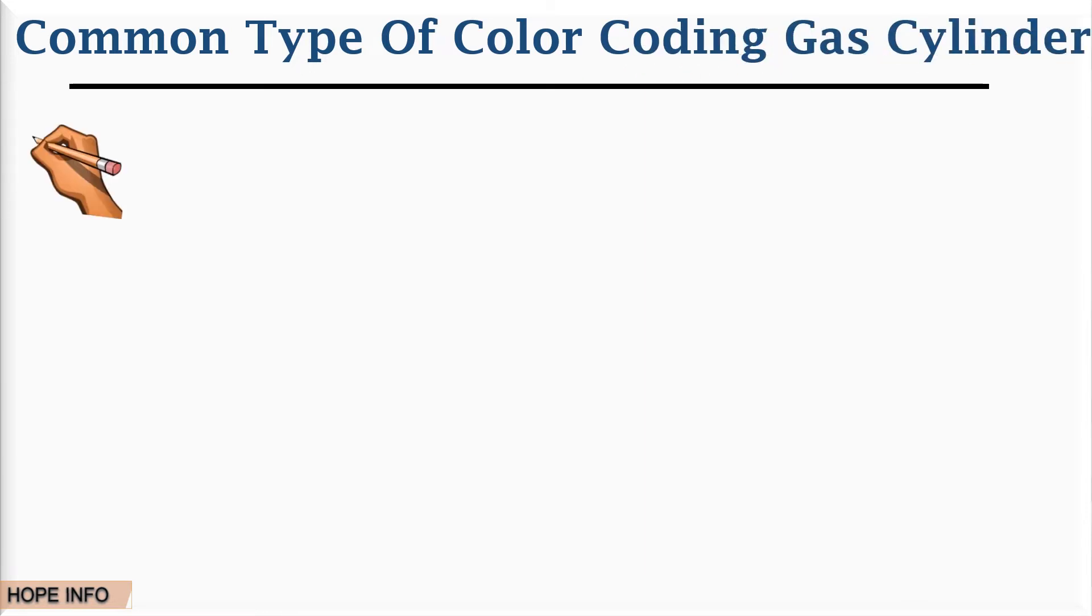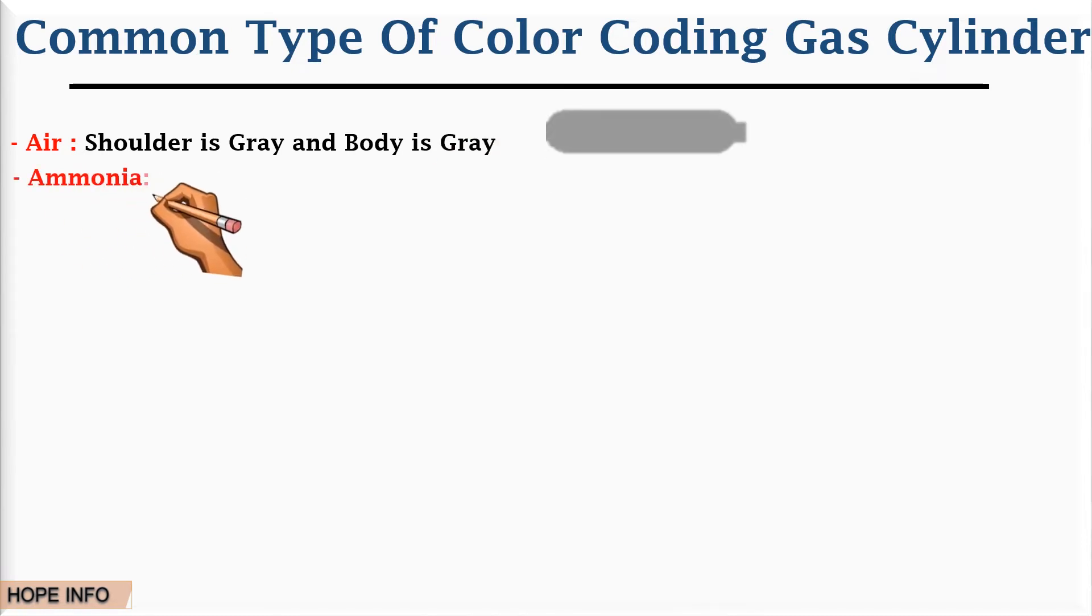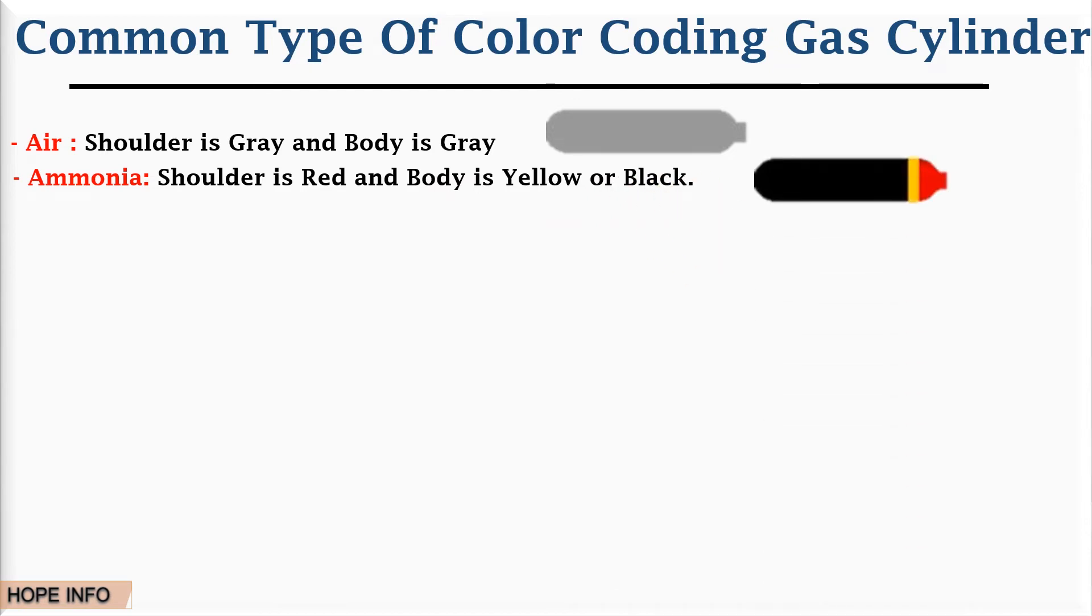Number one is air - the shoulder is gray and the body is gray. Number two is ammonia - the shoulder is red and body is yellow or black.